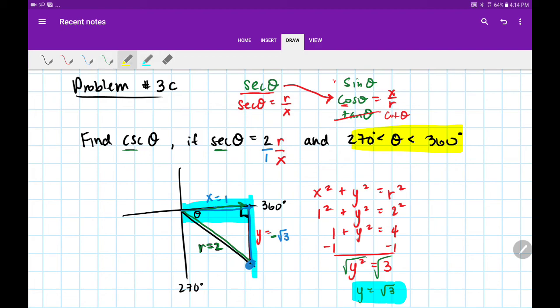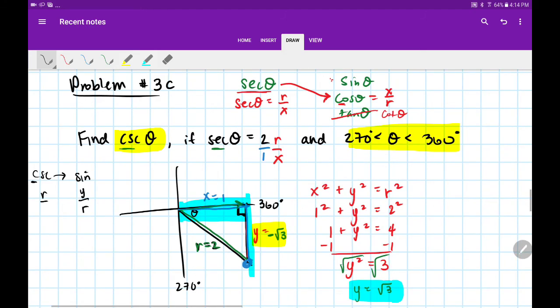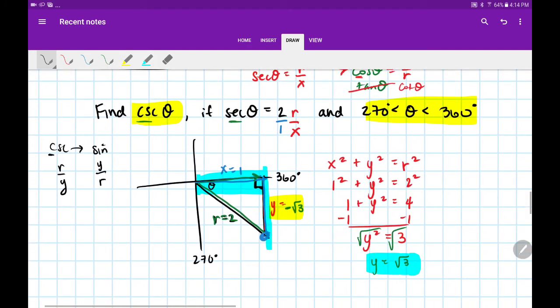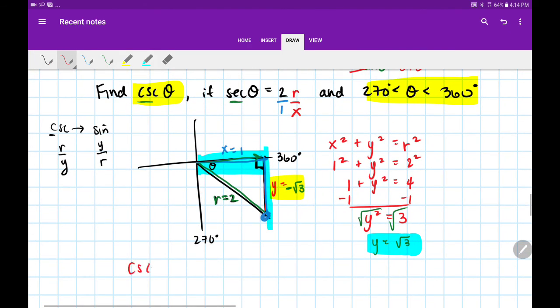Please don't forget your negative. Now we can answer the question to find csc(θ). Cosecant, since it already has the co, it's the reciprocal of sine. If sine is y/r, then cosecant is r/y. So csc(θ) is r/y, so my r is 2, and my y is -√3.